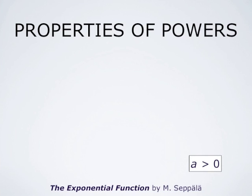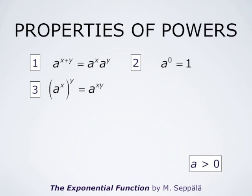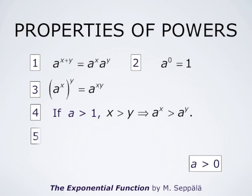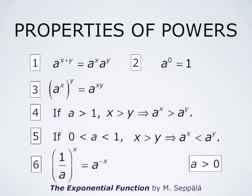Powers of positive numbers a have the following properties. A to the power x plus y equals a to the power x times a to the power y. A to the power 0 is always 1. A to the power x, raised to the power y, equals a to the power x times y. If a is greater than 1 and x greater than y, then a to the power x is greater than a to the power y — meaning a to the power x increases with x. The last property is that 1 over a to the power x equals a to the power negative x.